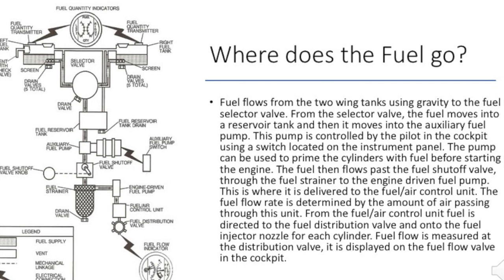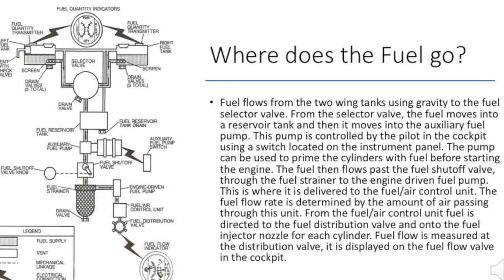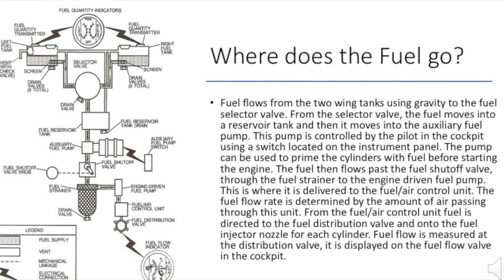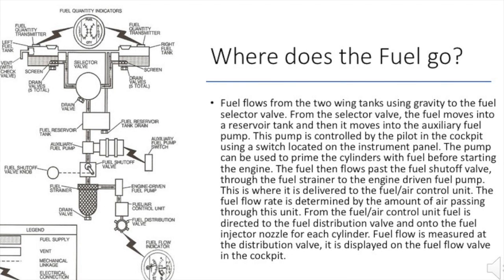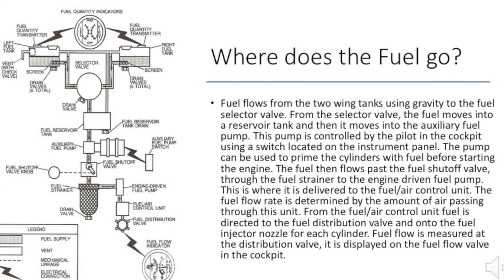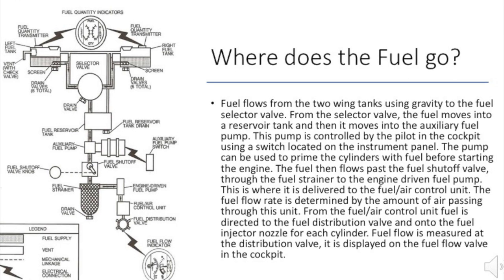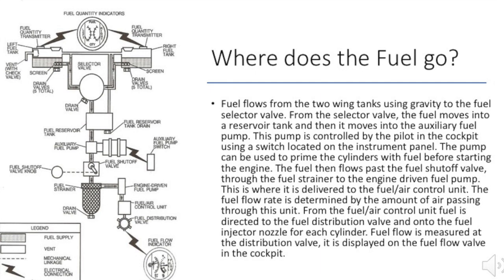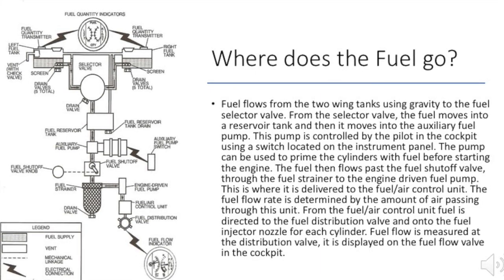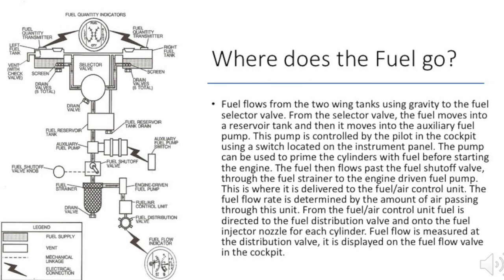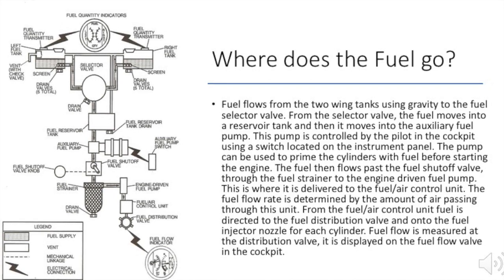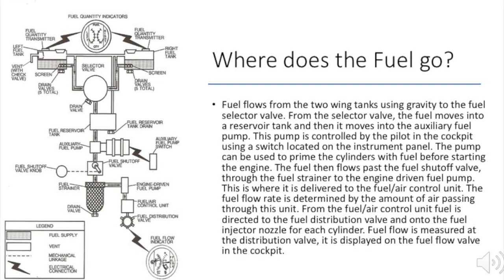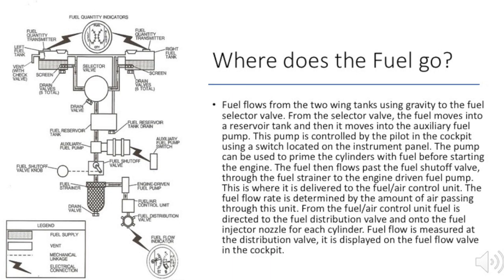The fuel then flows past the fuel shutoff valve through the fuel strainer located at the bottom of the diagram, and then it is taken to the engine-driven fuel pump. This is where it is delivered to the fuel/air control unit. The fuel flow rate is determined by the amount of air passing through this unit. From the fuel/air control unit, fuel is directed to the fuel distribution valve and onto the fuel injector nozzle for each cylinder. Fuel flow is measured at the distribution valve and displayed on the fuel flow gauge in the cockpit.